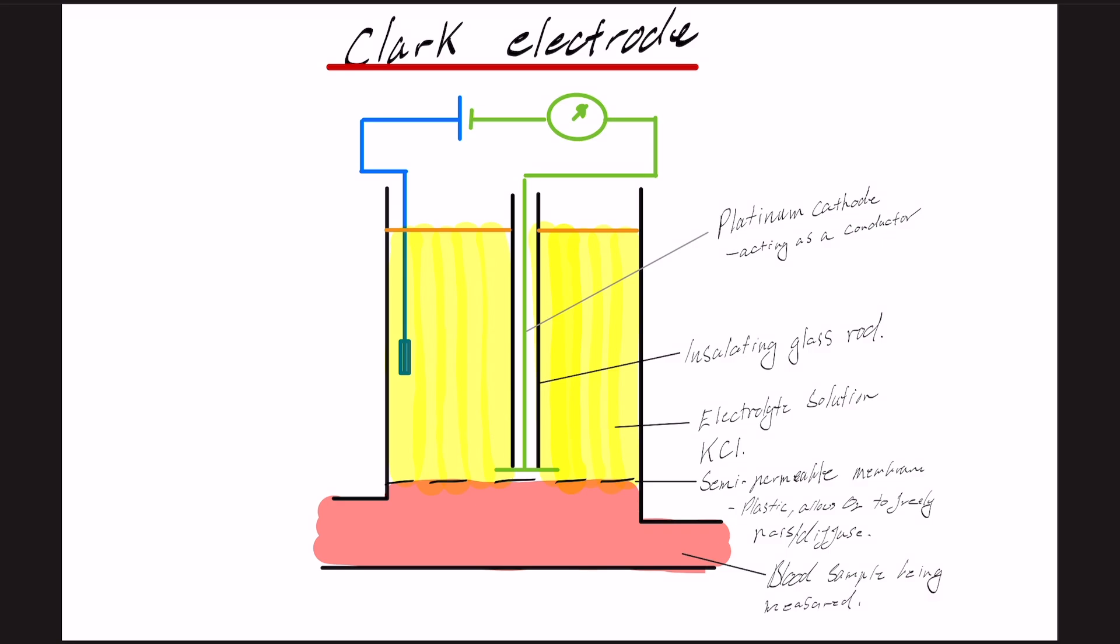In blue, we've got silver anode, and this reacts with the chloride in the KCl solution to make silver chloride, which is crusted at the bottom, which is why it's wider here.